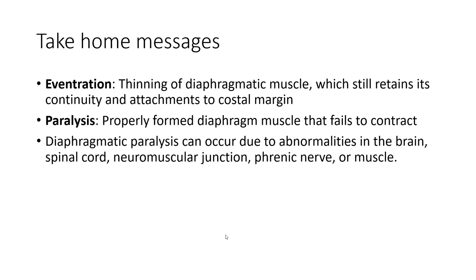Take-home message: Eventration is thinning of the diaphragmatic muscle which still retains its continuity and attachment to the costal margin. Paralysis refers to a properly formed diaphragmatic muscle that fails to contract. Diaphragmatic paralysis can occur due to abnormality in the brain, spinal cord, neuromuscular junction, phrenic nerve, or muscle. Thank you.